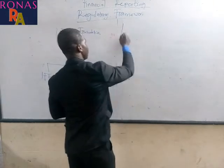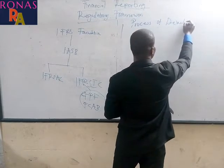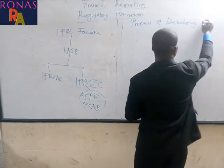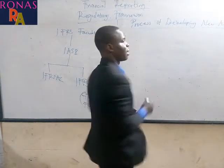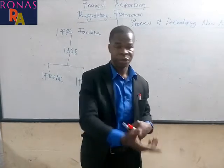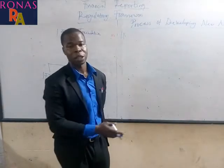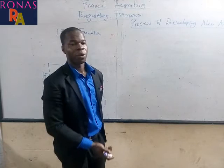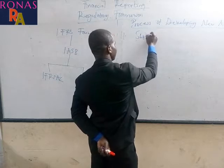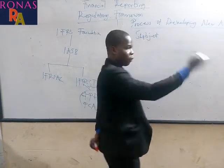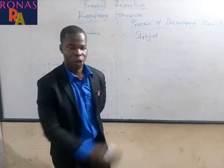The process of developing new accounting standards — there are about seven of them, though sometimes a step may be skipped. The first step is that a subject is identified as appropriate for a new or revised standard.